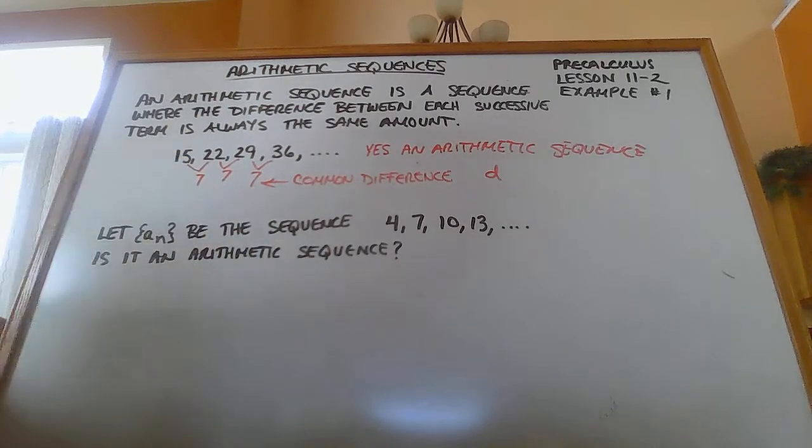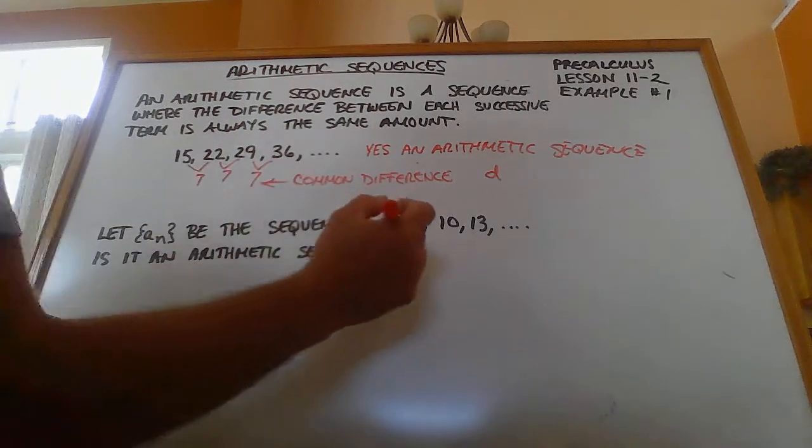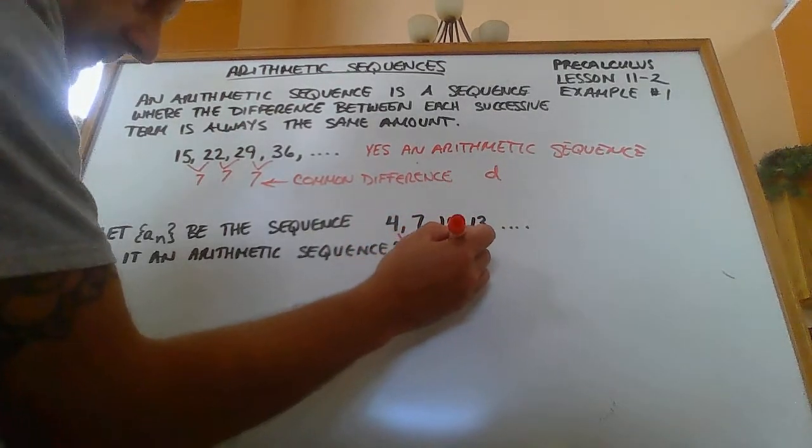So in this one here, we're going to let a sub n be the sequence 4, 7, 10, 13. Is this an arithmetic sequence? When I look at all the possible things that I have here, the difference is 3, the difference is 3, the difference is 3.